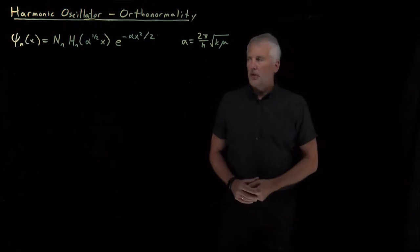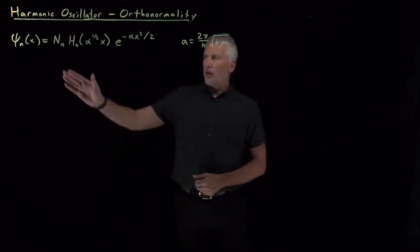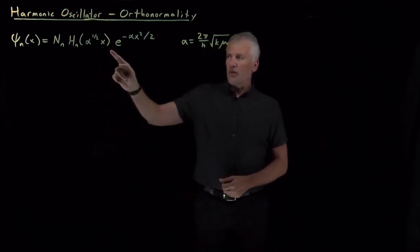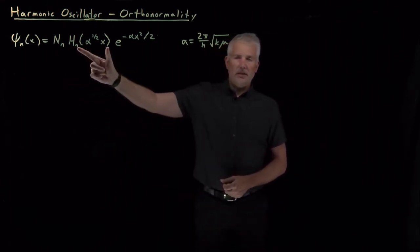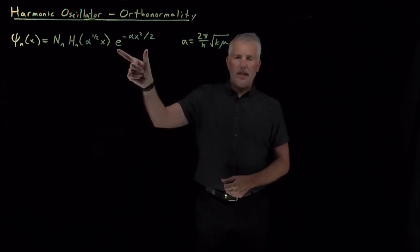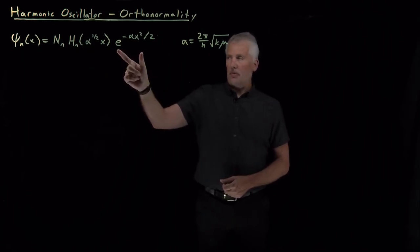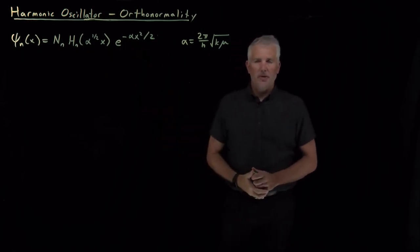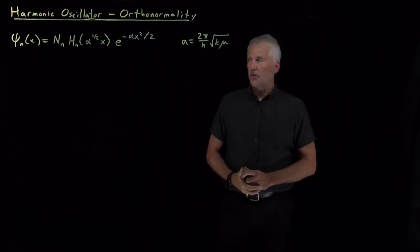The general form of the harmonic oscillator wave functions is a polynomial in x — the Hermite polynomial — multiplying a Gaussian function, with some carefully chosen constants to make sure it's an actual solution to the Schrödinger equation.